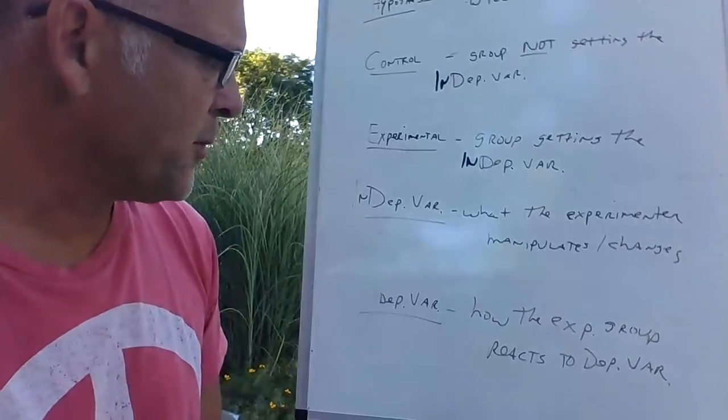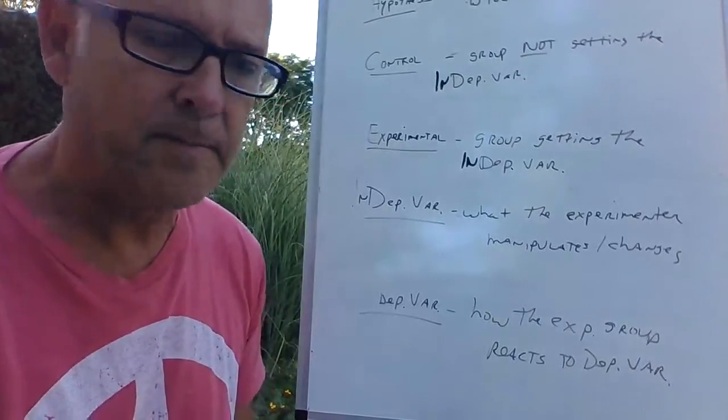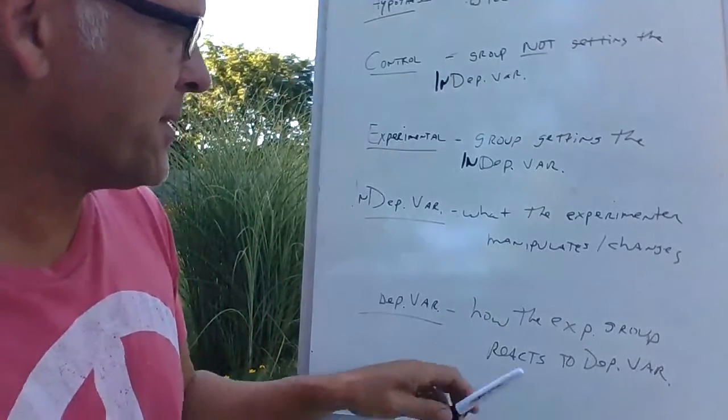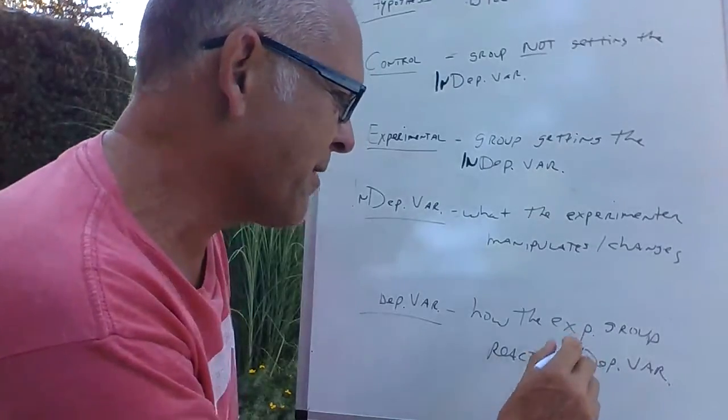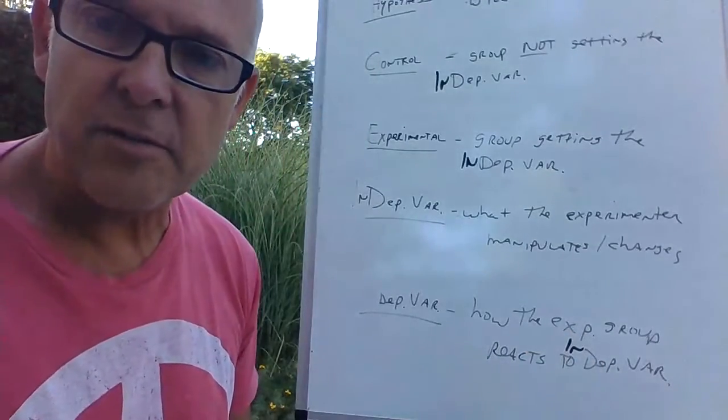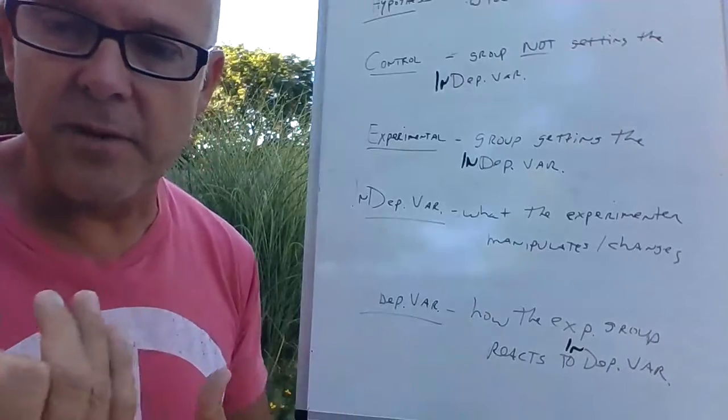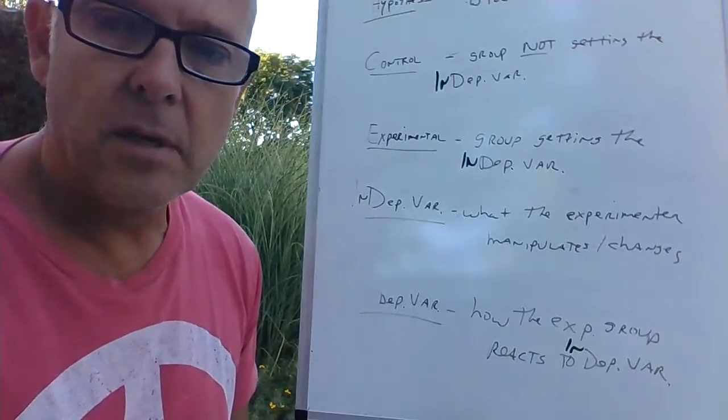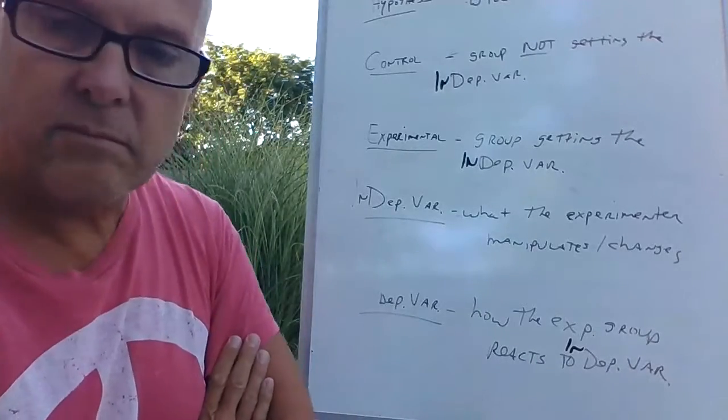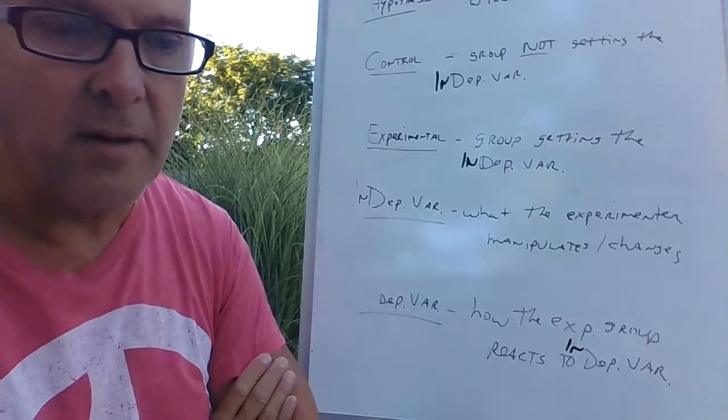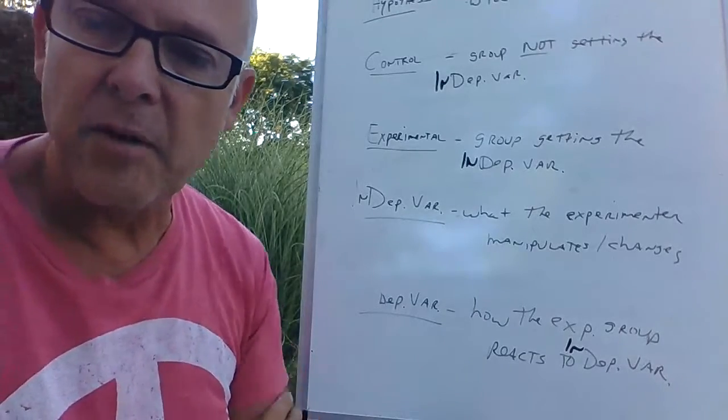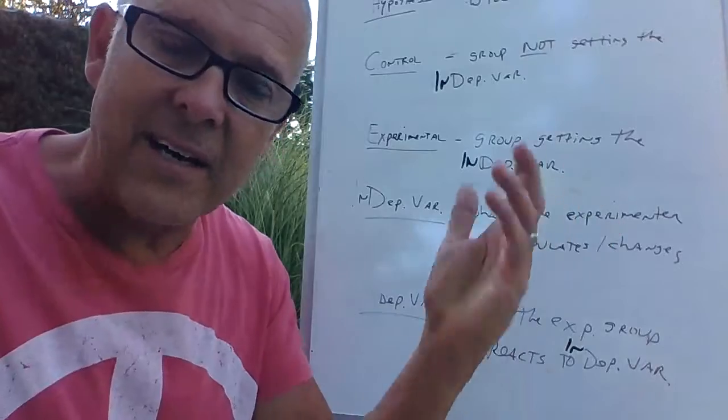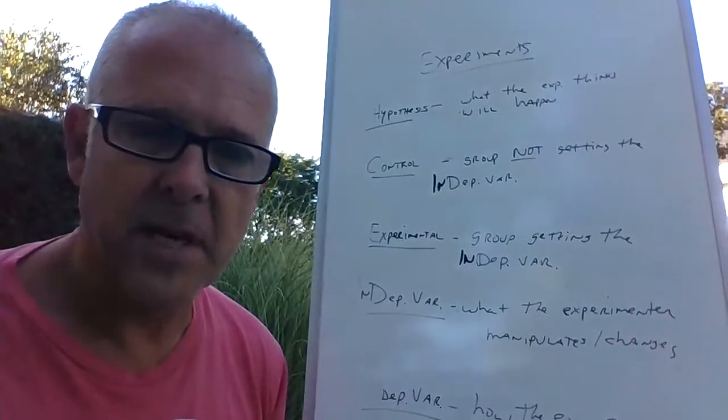And then finally, the last thing, the dependent variable is how the experimental group reacts to the independent variable. So will behavior change? Whether it does or whether it doesn't, that's the result. So in theory, if the behavior changes, then you paint the whole prison pink and voila, you've got better prisoners.